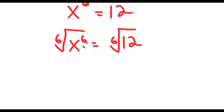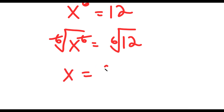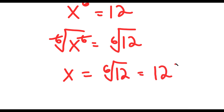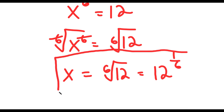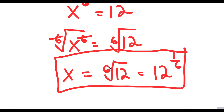So I get the sixth root of x to the power of 6 is equal to the sixth root of 12. Now, the sixth root of x to the power of 6 is simply just x. So I get x is equal to the sixth root of 12, which is the same thing as 12 to the power of 1 over 6. So either of these two work, and this is my answer to this problem.